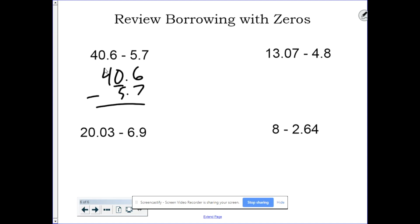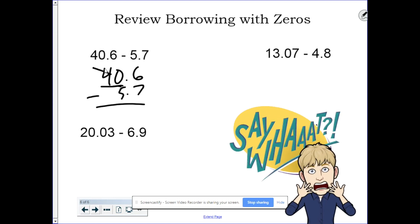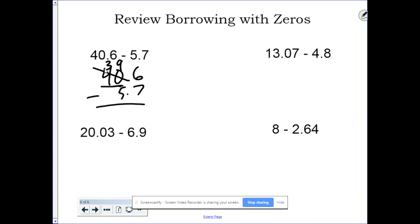Well, instead, here's my zero. Don't think of it as just zero. Think of it as 40. Borrow from the 40. 40 becomes 39. And then I make the 6 into a 16. 16 minus 7 is 9. 9 minus 5 is 4. 3 minus nothing is 3. 34.9.